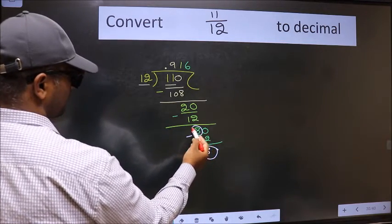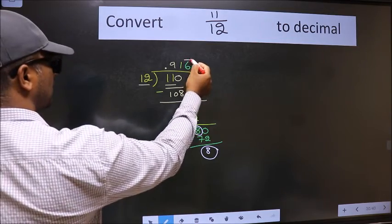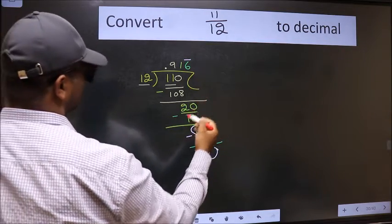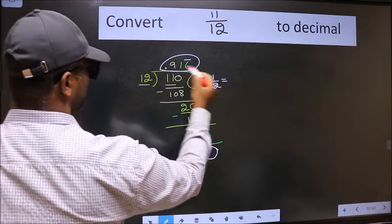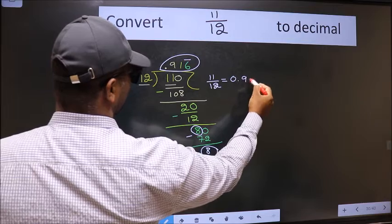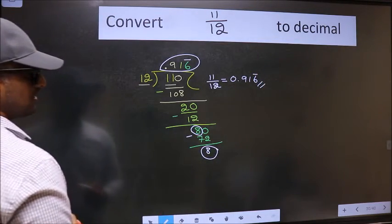Earlier also we got 8. That means we get bar on this number. Therefore, the decimal of 11 by 12 is 0.916 bar. This is our answer.